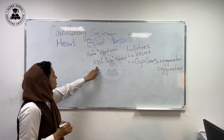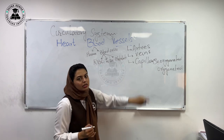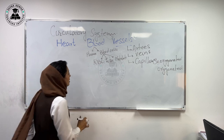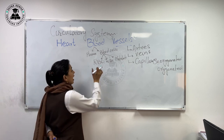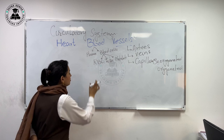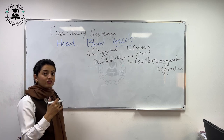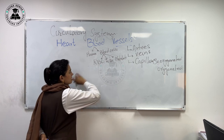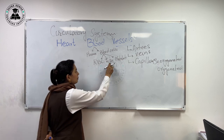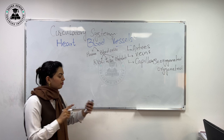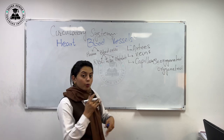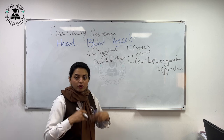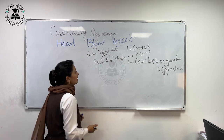Red blood cells carry oxygen to all other parts of the body. They contain an important component called hemoglobin. They do not have a nucleus and have large space, which allows oxygen to bind with hemoglobin and be transferred to other parts of the body. White blood cells are of two types: phagocytes and lymphocytes, which play a very important role in the formation of antibodies — so white blood cells are related to immunity.